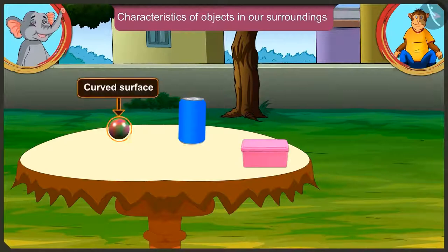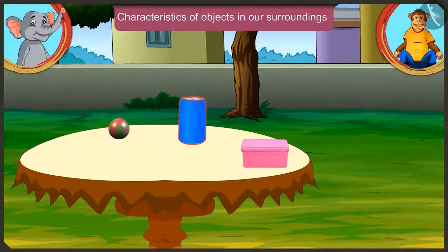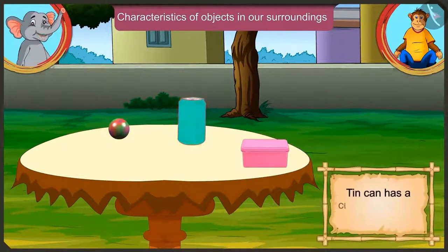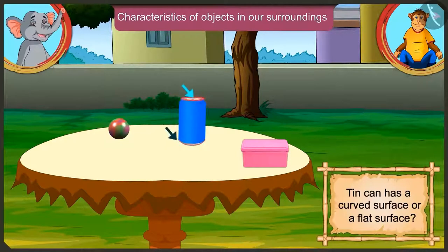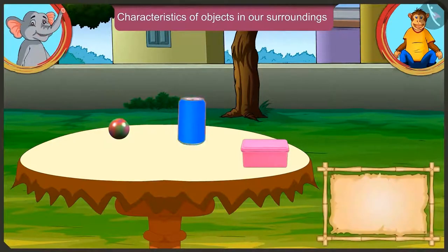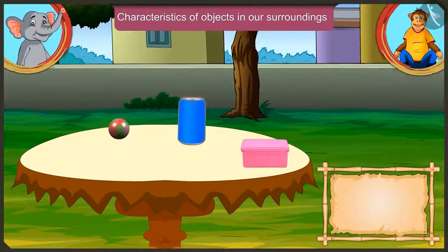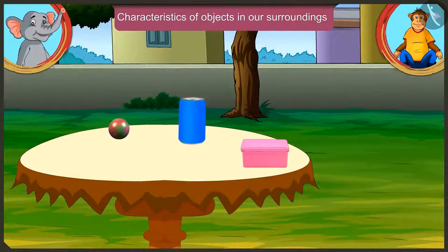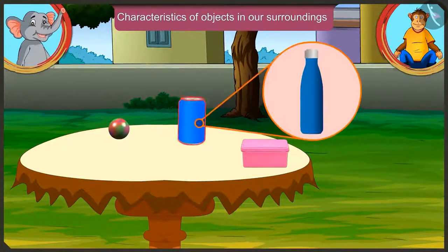This marble has a curved surface. And the tin can? This can stand upright like the lunch box, but it is also curved like the marble. So does it have a curved or flat surface? It has a cylindrical shape — it is a cylinder. The surface of cylindrical objects is curved. So this tin can also has a curved surface just like the water bottle.